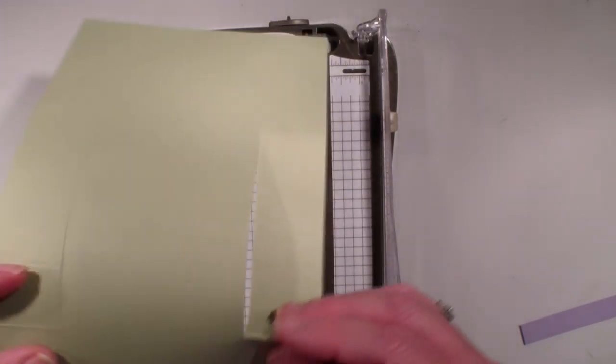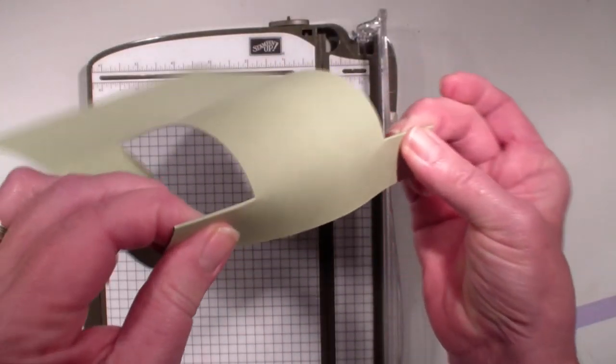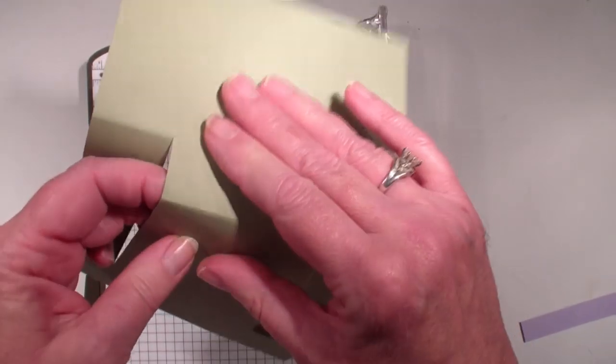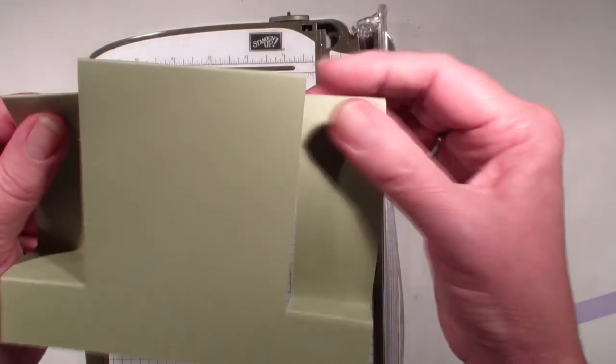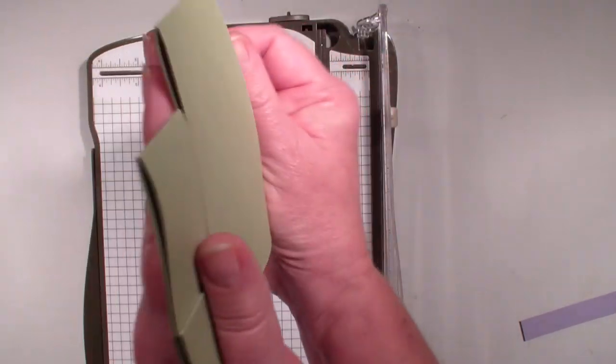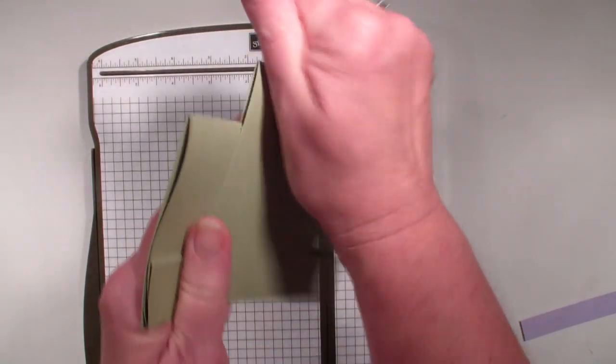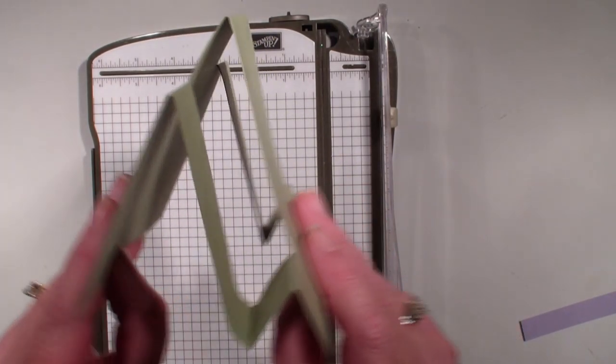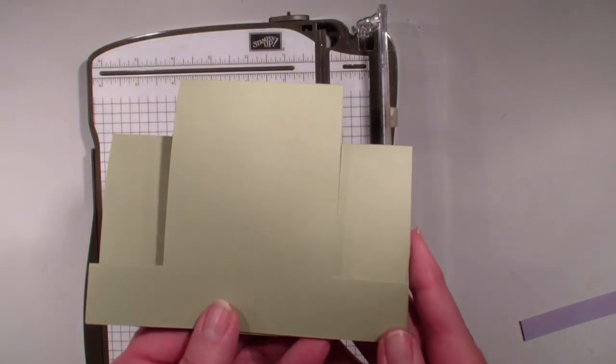Next what we're going to do is we're going to mountain fold at the 1 inch and then valley. We're going to mountain fold in the center and also at the 5¼. And there you have it, your step card. Because we use the 5½ by 8½ piece of paper, it will fit in your number 2 invitation size envelope.